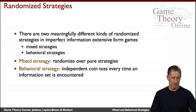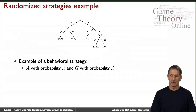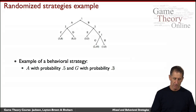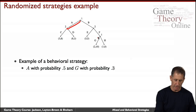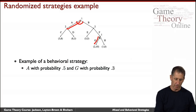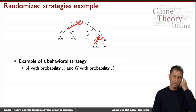Take this tree. Here's an example of a behavioral strategy. Player one can take action A with probability 0.5 and G with probability 0.3. That means over here they'll randomize 0.5/0.5, and over here they'll randomize 0.3/0.7. That's a behavioral strategy.